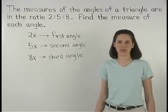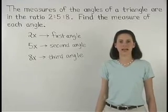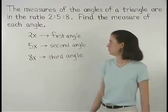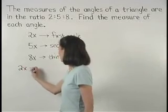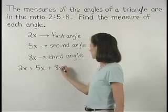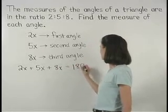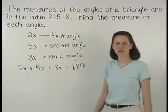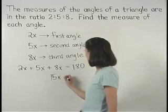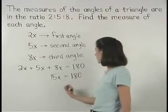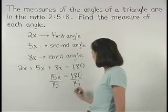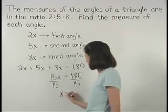Now, since the measures of the angles of a triangle add to 180 degrees, we can set up the equation 2x plus 5x plus 8x equals 180. Simplifying on the left side gives us 15x equals 180, and dividing both sides by 15, we find that x equals 12.